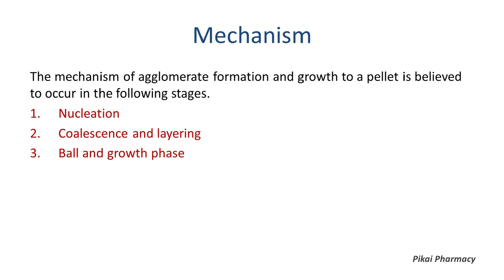During coalescence, layering also occurs. In layering, small fragments deposit on the surface of the nuclei and increase its size. Layering is a process which involves the successive deposition of small fragments and fines on the previously formed nucleus. In the ball growth phase, abrasion causes the transfer of materials from one granule to another, affecting the growth of agglomerated particles.